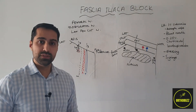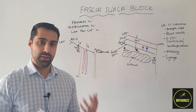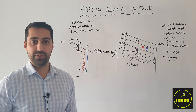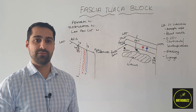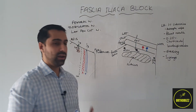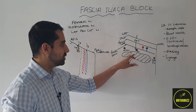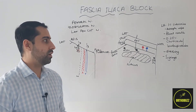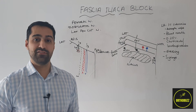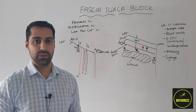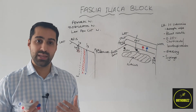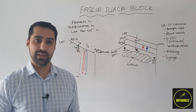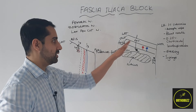Once we've felt those two pops, we aspirate to ensure there's no flashback of blood before injecting, confirming we're not in the femoral artery or vein. If we're getting high resistance, it may be that we've gone too far into the iliacus muscle and we may need to withdraw a little. We inject five millilitres of local anaesthetic, then aspirate again to check for flashback. It's a low resistance compartment so it should be easy to infiltrate. Aspirating every five mils, we then withdraw the needle and place a simple dressing over the skin.